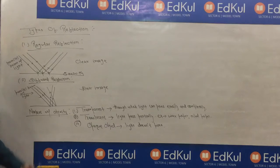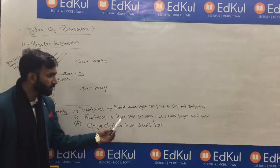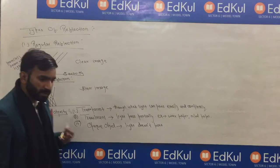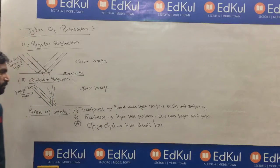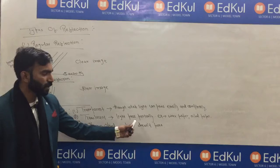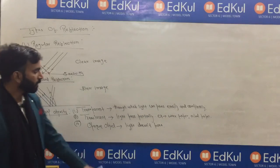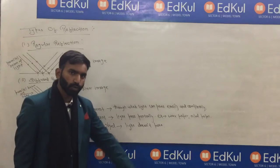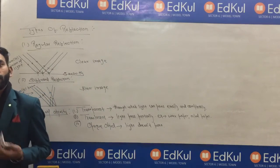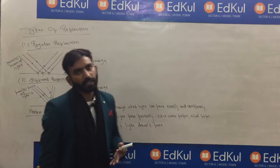Now let's talk about the nature of objects. There are three types: transparent, translucent, and opaque objects. Transparent objects are those through which light passes easily and completely — for example, air. Translucent objects allow light to pass through only partially — for example, wax paper or oil paper. Opaque objects do not allow light to pass through at all — for example, a wooden block.